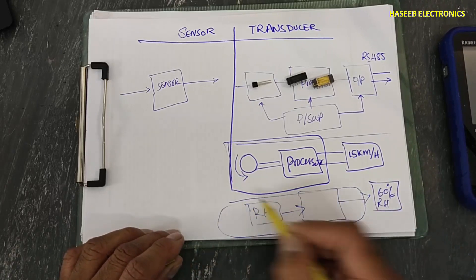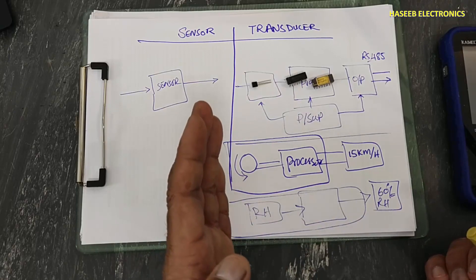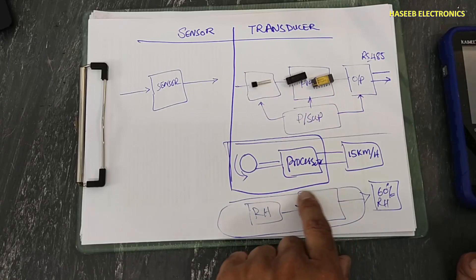So this circuit is now transducer. It will transduce one energy format into another energy format that is processed after conversion.